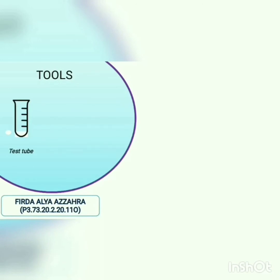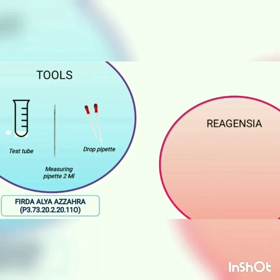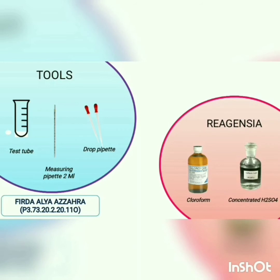The tools are a test tube, 2 ml measuring pipette, draw pipette, acetic anhydride, and concentrated H2SO4.